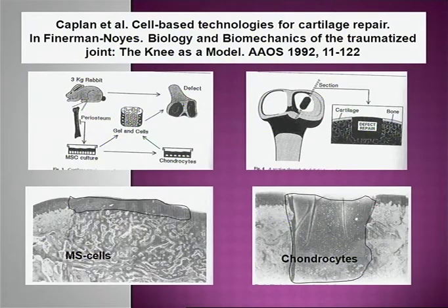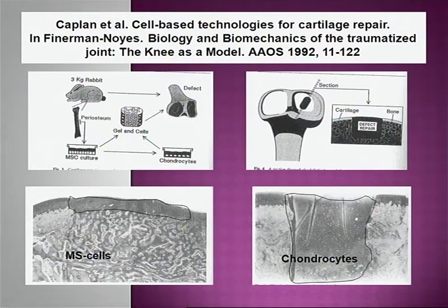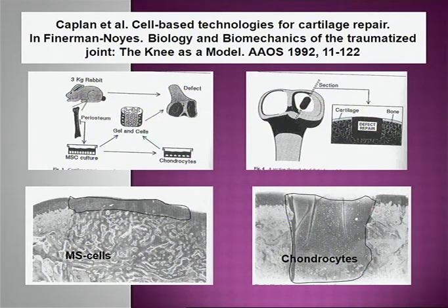If we use only mesenchymal stem cells, as done by Kaplan and co-workers, they used a scaffold with stem cells, or just chondrocytes in the scaffold. With stem cells, you get both cartilage repair and bone repair. But if you use committed chondrocytes, you also get cartilage in the bony area. So in that sense, it is more interesting to use stem cells for cartilage repair.